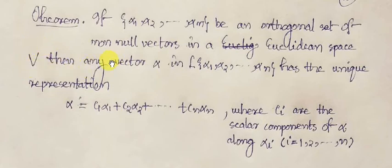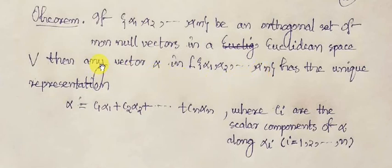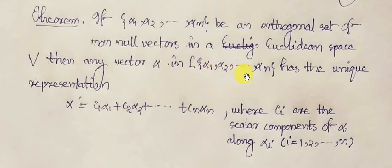You are already familiar with linear combinations of vectors from your earlier vector space work. Here we consider the linear span of this set of vectors {alpha_1, alpha_2, ..., alpha_n}, and we take a vector alpha from this linear span.